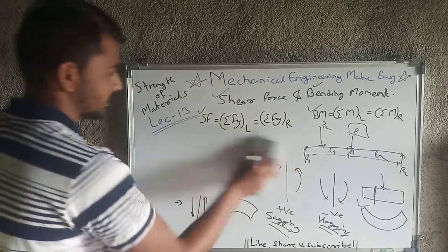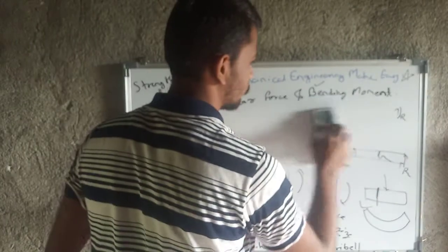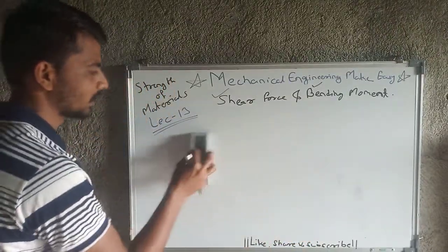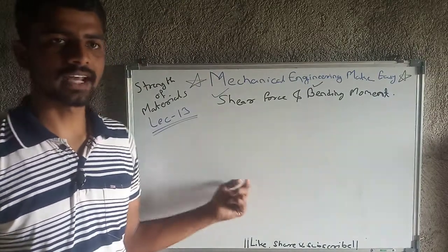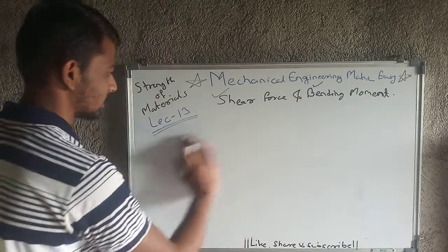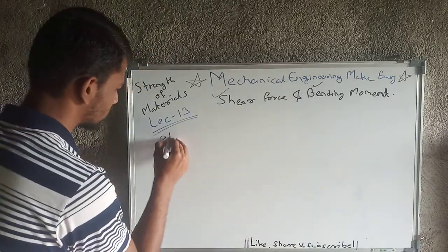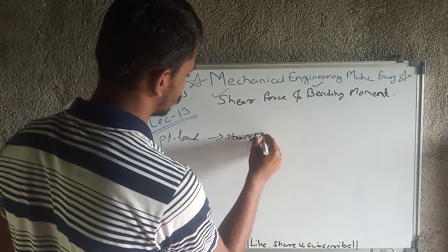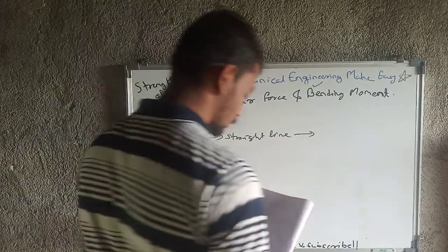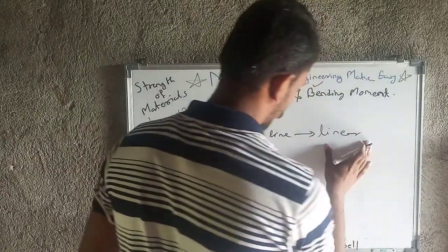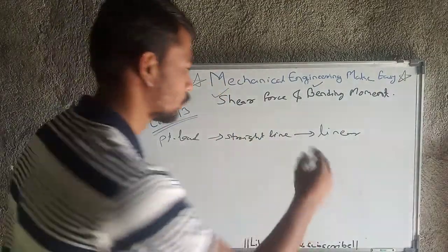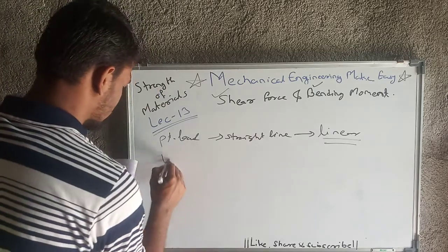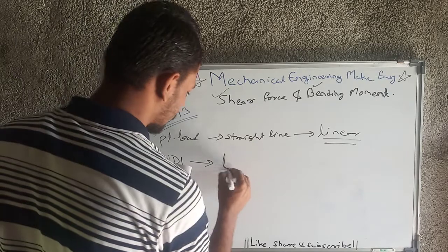Now we will discuss types of loading and how the shear force diagram and bending moment diagram vary. For a point load, the shear force diagram will be a straight horizontal line, and the bending moment diagram will be linear — meaning there may be an inclined line but no curves, just a linear variation.